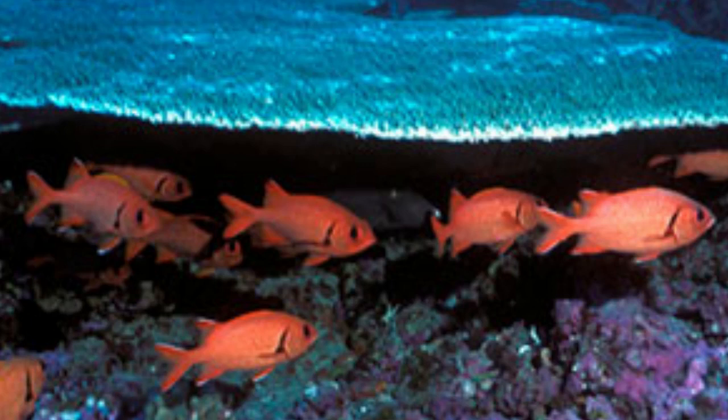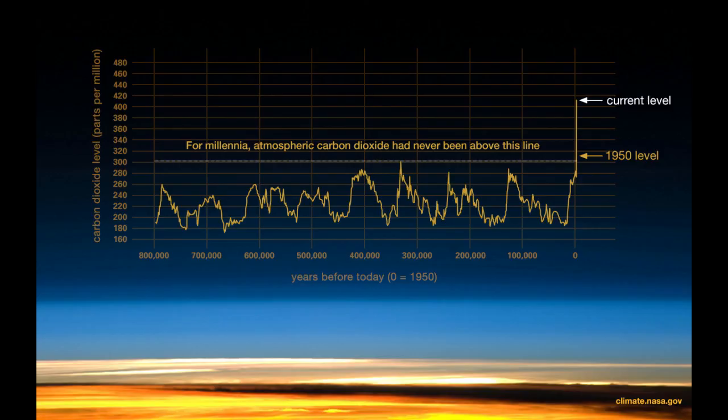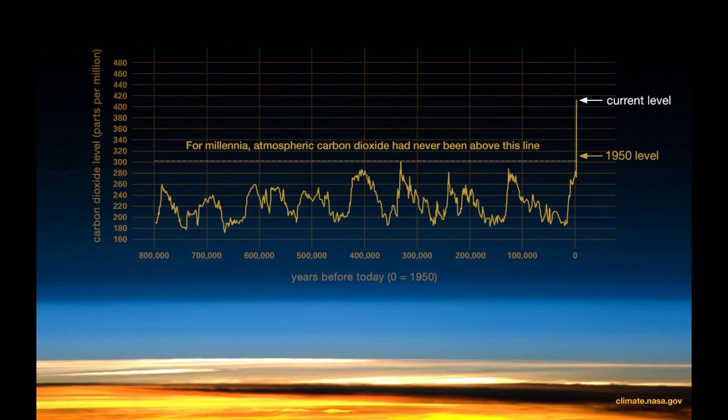has also witnessed increasing numbers of intense rainfall events. Since the beginning of the Industrial Revolution, the acidity of surface ocean waters has increased by about 30 percent. This increase is the result of humans emitting more carbon dioxide into the atmosphere and hence more being absorbed into the ocean. The ocean has absorbed between 20 and 30 percent of total anthropogenic carbon dioxide emissions in recent decades.